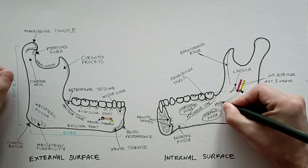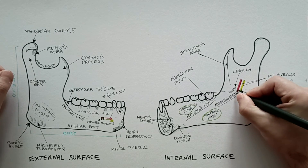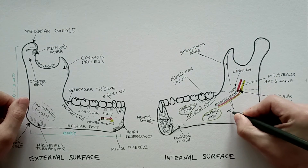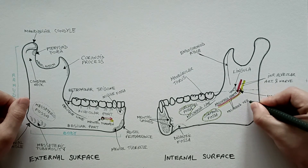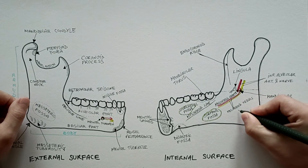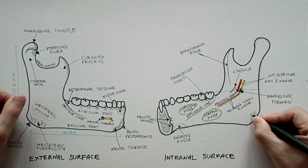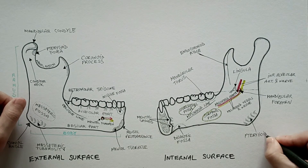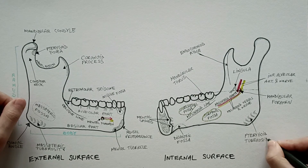The mylohyoid groove runs anteroinferiorly from the edge of the mandibular foramen. It lodges the mylohyoid vessels and nerve, which branch from the inferior alveolar vessels and nerve just above the mandibular foramen. Lastly, the pterygoid tuberosity is located on the medial surface of the pterygoid angle and marks the insertion of the medial pterygoid muscle.